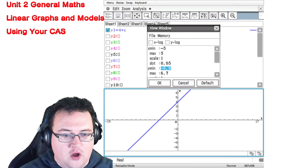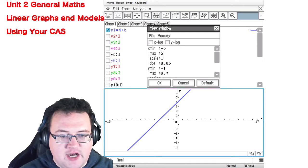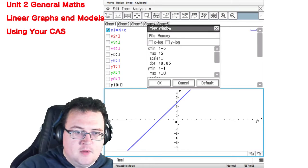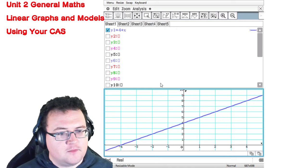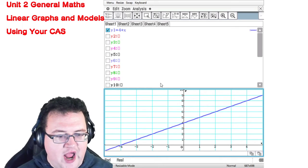And then it asks for the y minimum of minus 1 and the y max of 10. You're going to press OK on that and it will redraw the graph for you with the required information.